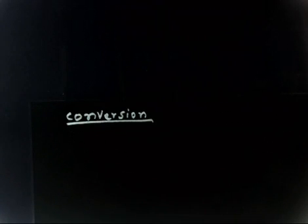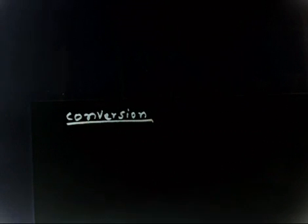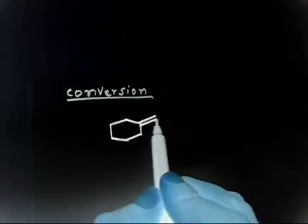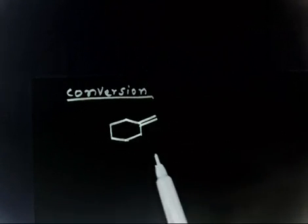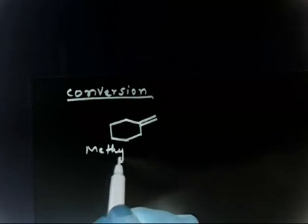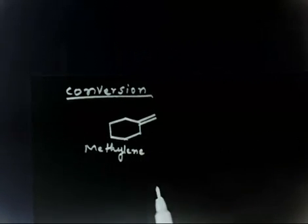Let us discuss this problem — this is a conversion of one compound to another. How do you synthesize a compound using methylene cyclohexane as your starting material? This molecule is given to you, and from this molecule you have to prepare some other molecules. This molecule is methylene cyclohexane.